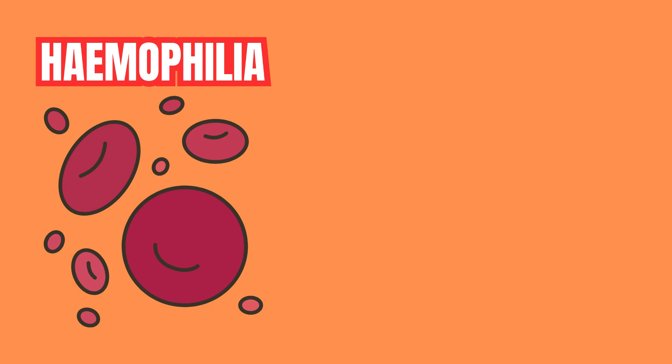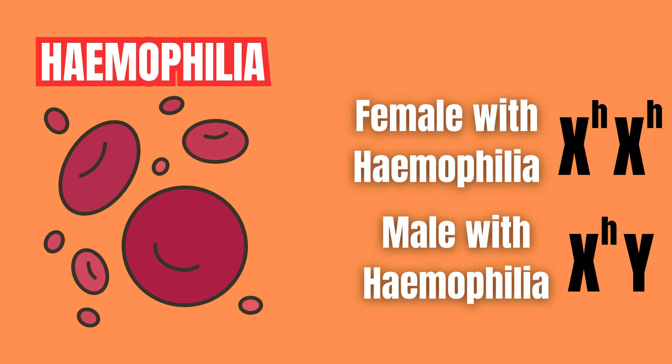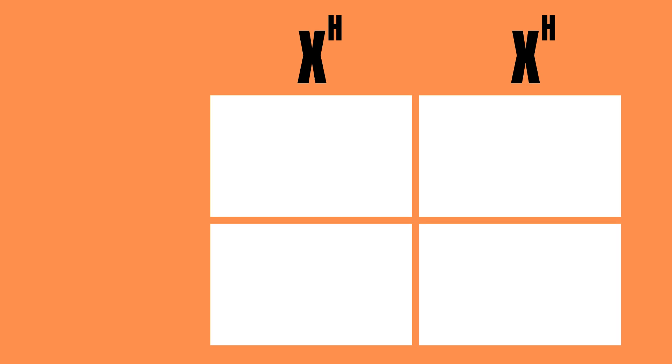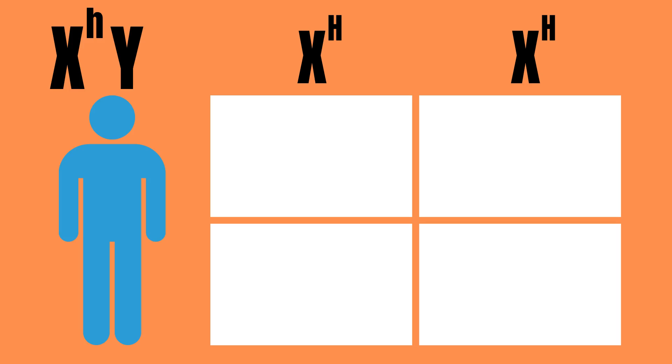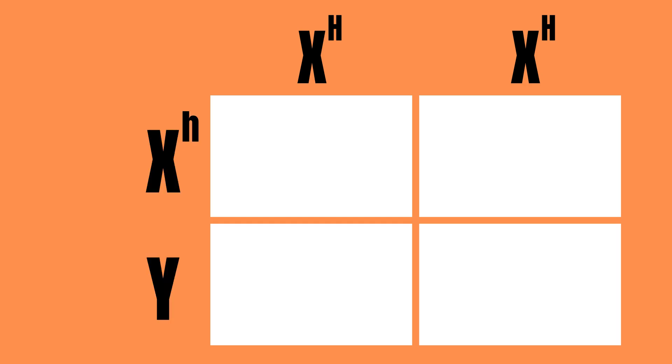Hemophilia is a good real-life example of a recessive trait that is sex-linked in humans, so let's use that to practice solving a Punnett square for a sex-linked trait. Let's imagine that the woman in this example is homozygous dominant for the trait of hemophilia, meaning that she does not express it nor does she carry it. Let's pair her up with a man that suffers from hemophilia, meaning that his one allele for hemophilia is recessive.